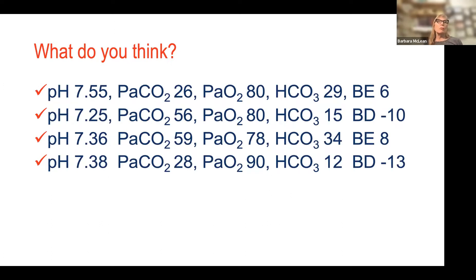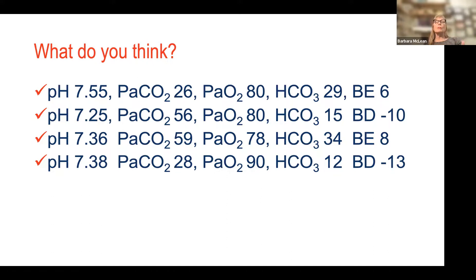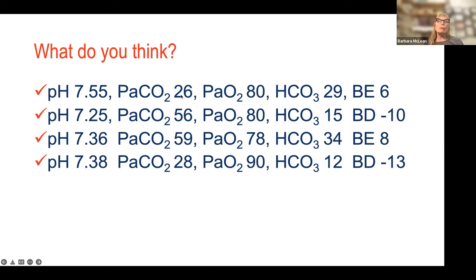Case one: pH is 7.55 — not perfect, it's up, outside range, therefore alkalotic. Then look at CO2: it's 26 — not perfect, down, also outside range. You're blowing off that acid, blowing off CO2 — you have a respiratory alkalosis. Then look at bicarb: bicarb is 29, also up and outside range, which means metabolic acid is down and base is in excess. So we don't just have one problem — we've got two: mixed respiratory and metabolic alkalosis causing an alkalotic pH.